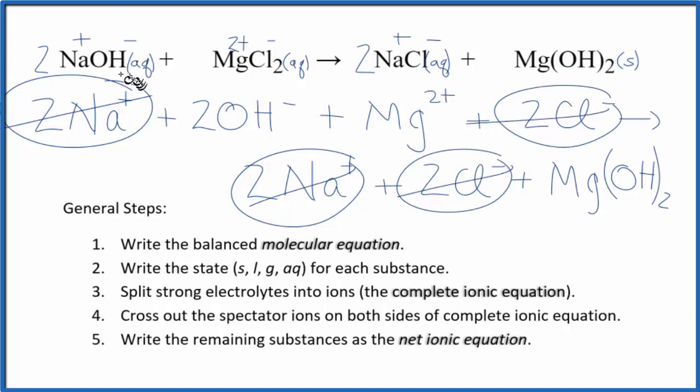And what remains is the net ionic equation for NaOH plus MgCl2. I'll clean this up and write the states in, and we'll have our net ionic equation.